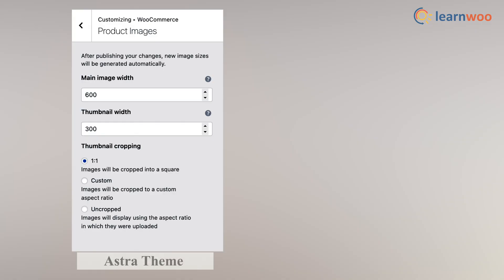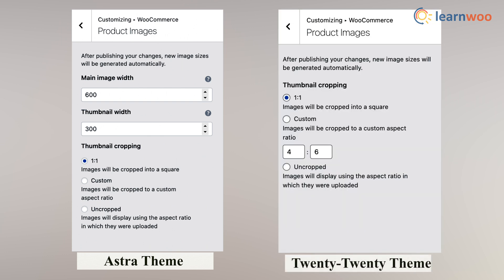This entire resizing WooCommerce product images option is not provided in all themes. Being able to use this particular option may completely depend on the theme you are using, so make sure to check that. For example, the Astra theme lets you customize image widths; however, the default 2020 theme hides the option in the customizer.